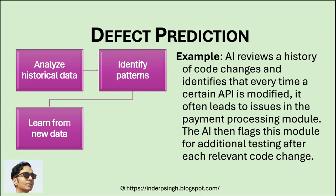Artificial intelligence in software testing is also used for predicting defects. AI can analyze historical data — such as previous test results, code changes, and bug reports — to identify patterns that might indicate where defects are likely to occur in the current project. For instance, if a certain module has historically had a high rate of bugs after a specific type of update, the AI can flag that module as high risk.